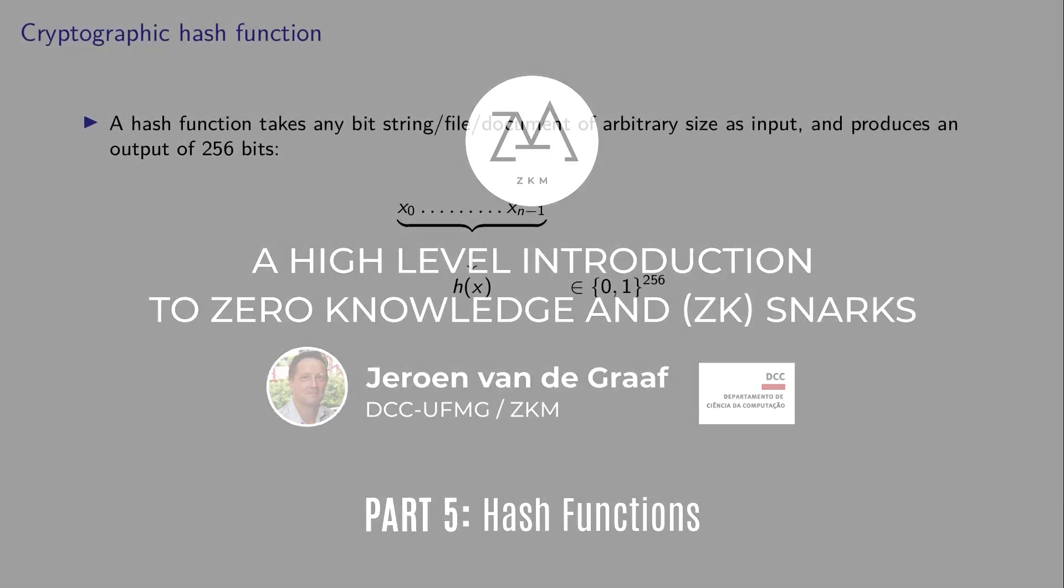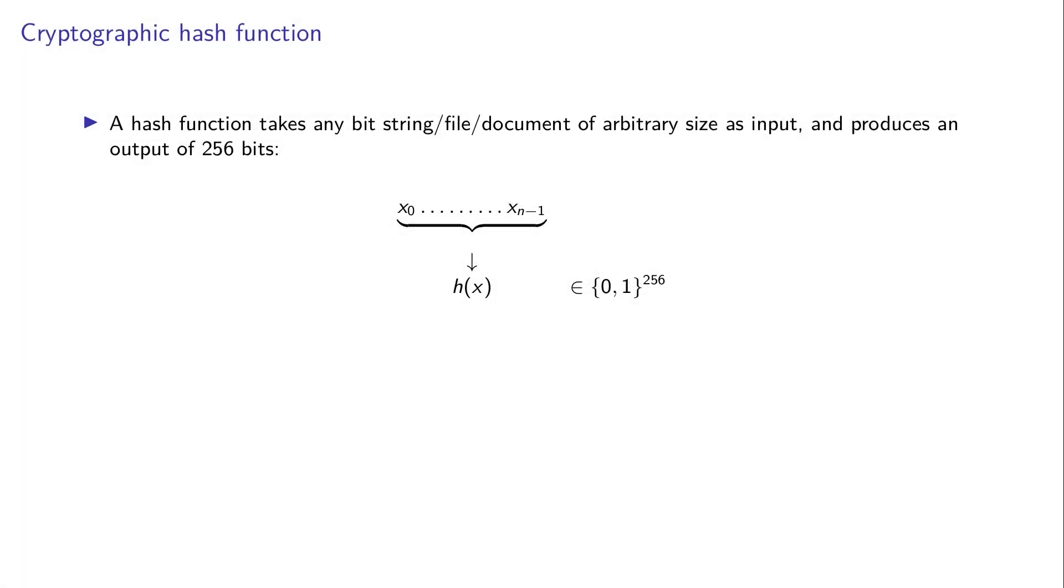And so while we're at it, let's talk a little bit about the cryptographic hash function. A hash function takes any bit string or file or document of arbitrary size as input and produces an output of 256 bits. So this is depicted here, the H of X is some string of size 256.